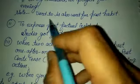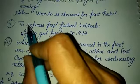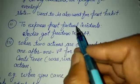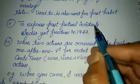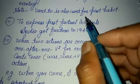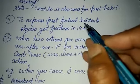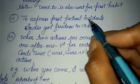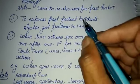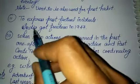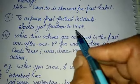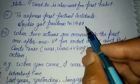The second point: to express past factual incidents. To show facts from the past, we again use the verb's second form. For example: 'India got freedom in 1947.'